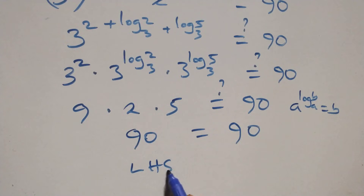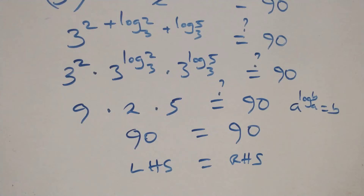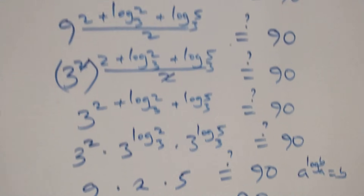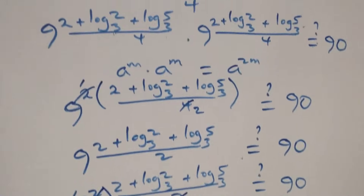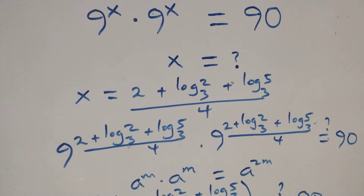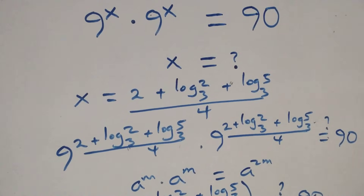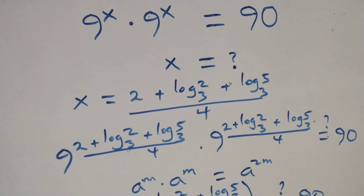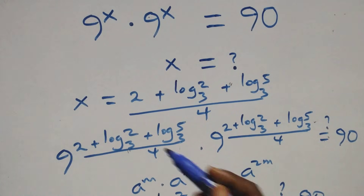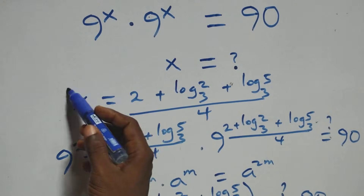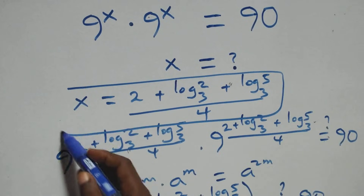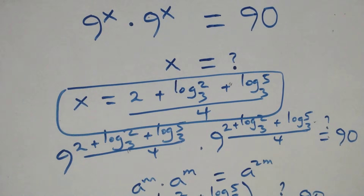The left-hand side equals the right-hand side. Therefore we conclude that x equals (2 plus log base 3 of 2 plus log base 3 of 5) over 4 satisfies this given problem.